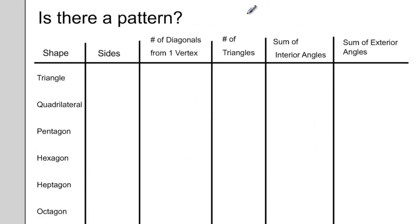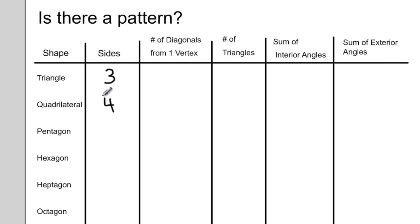Do you see a pattern yet? We've now looked at a few different shapes, such as the triangle and the quadrilateral. Triangles have three sides. Quadrilaterals have four sides. And I've asked you to draw a pentagon, which has five sides.